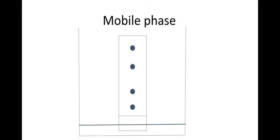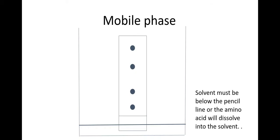Now what will happen here is it will cause your amino acids to separate as this happens. Now the solvent must be below the pencil line, otherwise the protein sample and the amino acids will dissolve straight into the solvent and you won't get the sample running up the chromatogram. It'll all go into the solvent which is absolutely no good.